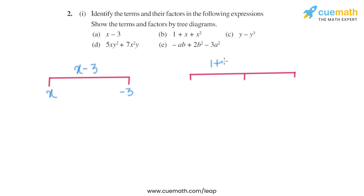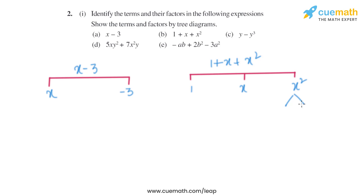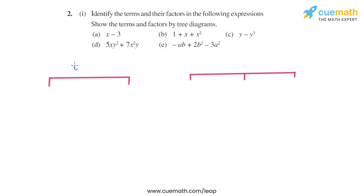The expression given is 1 plus X plus X square. The terms are 1, X, and X square. The factor of 1 is 1 only, because 1 is a constant term. The factor of X will be X, and the factor of X square will be X and X.